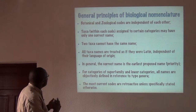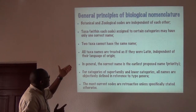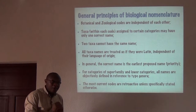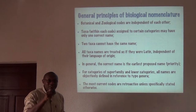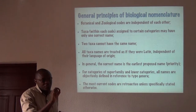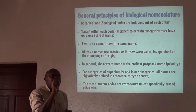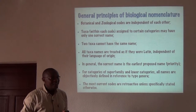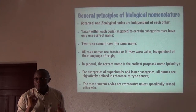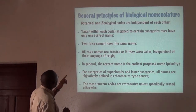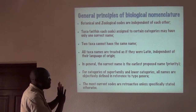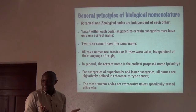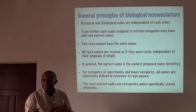Taxa within each code assigned to a certain category may have only one correct name. You may have several scientific names referring to the same organism, but only one of them is a valid name — all the others are synonyms. Equally, two taxa cannot have the same name; if they did, the result would be confusion.